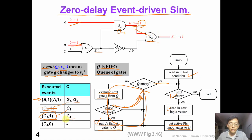Finally, we pop out the last event from the queue and we execute this falling change at the G4 output. Now, there is no more gate in the queue, so we finish this simulation.